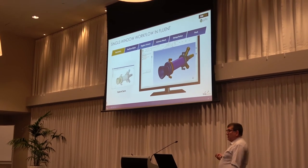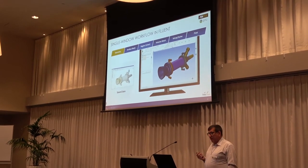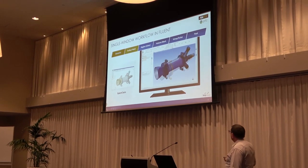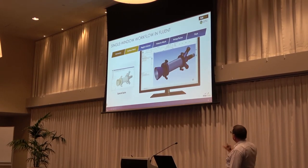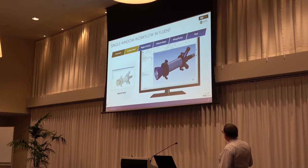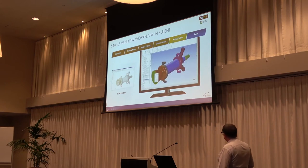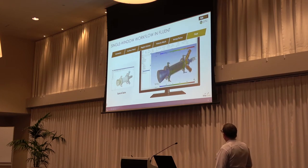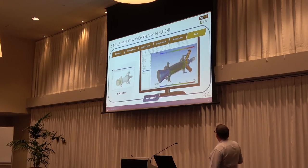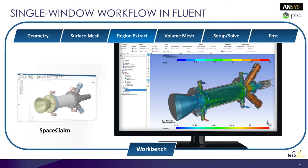We're aiming for this single window workflow. We've got geometry here from SpaceClaim. We'll take it across into Fluent and surface mesh it. You'll notice we haven't extracted the flow geometry yet — we've got the metal. So we'll do some capping, then get a volume mesh, including a mosaic mesh. Set it up, solve it, do post-processing — all that could be done in Workbench as long as you've moved to 2019 R2. This is making things much, much easier as a workflow.